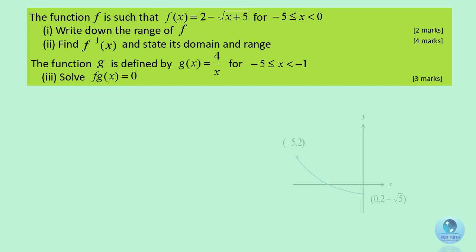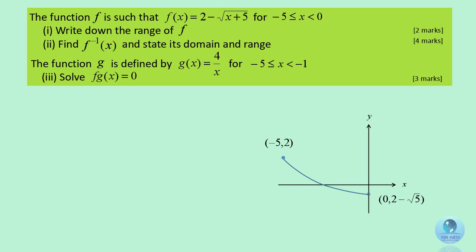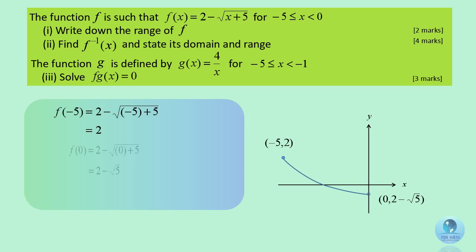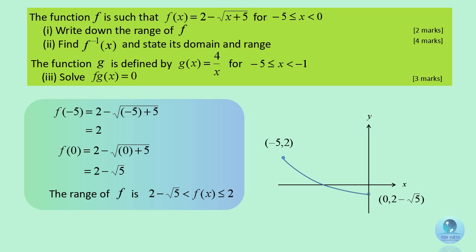This is how the graph of this function looks like. We will talk about basic graph sketching and transformation in the next video, so stay tuned. In this function, to find the range of f, substitute the minimum and maximum values of the given domain into the function. The range for function f is greater than 2 minus square root 5 but lesser or equal to 2.